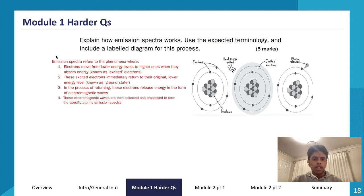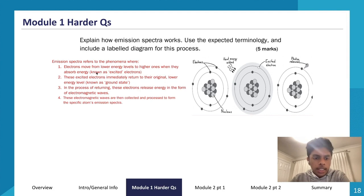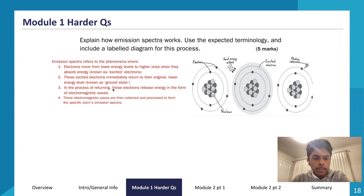Now let's structure the answer. Emission spectra refers to the phenomena where: one, electrons move from lower energy levels to higher ones when they absorb energy — known as excited electrons; two, these excited electrons immediately return to their original lower energy levels, known as ground state; three, in the process of returning, these electrons release energy in the form of electromagnetic waves; four, these electromagnetic waves are collected and processed to form the specific atom's emission spectra.